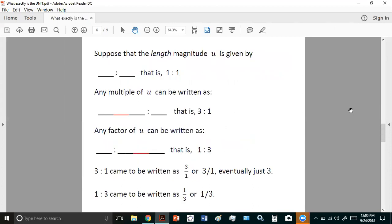Suppose that the length magnitude U is given by this particular line length here. Then this line length compared with this line length, or just one colon one, denotes the unit length or the unit itself that we're using. So any multiple of U can be written as follows. So if we took three of these lengths and put them together like that, compared with one of those lengths, then we get the idea of three or three units.